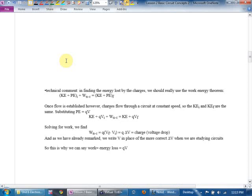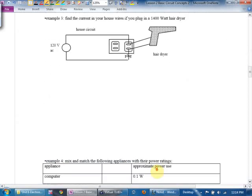Let's go technical here. In finding the energy lost by the charges, technically we should use the work energy theorem, which this author writes this way. However, the charges flow at a constant speed, so your change in kinetic is zero. You know what? For what it's worth, getting technical, all he's saying is this does work. The fact that we can go energy losses, QV. We don't need to take the kinetic into account because the charges flow at the same speed throughout the current. They don't change their speed. Here's the more interesting questions.